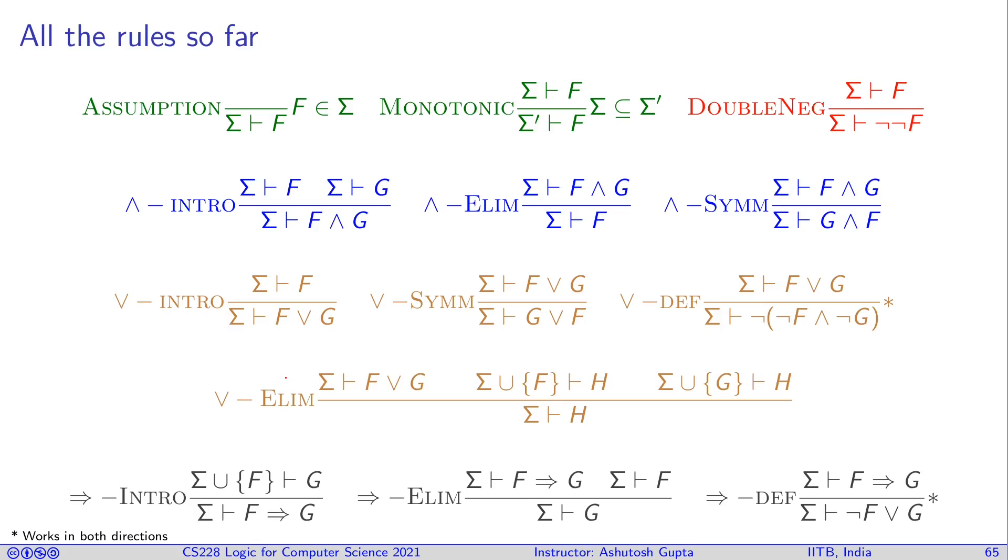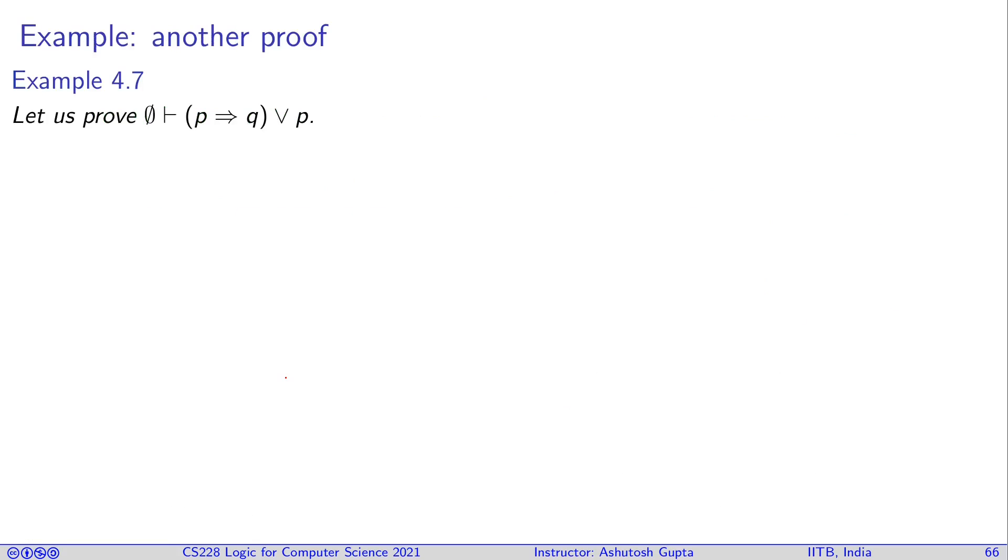So, you will see that in the exams, I will ask you to prove few things and you need to use these rules to derive the needed statement for that particular couple. Let's take this problem: p implies q or p. It's either p is true or p implies q is true. Strange thing but let's see how can we prove it.